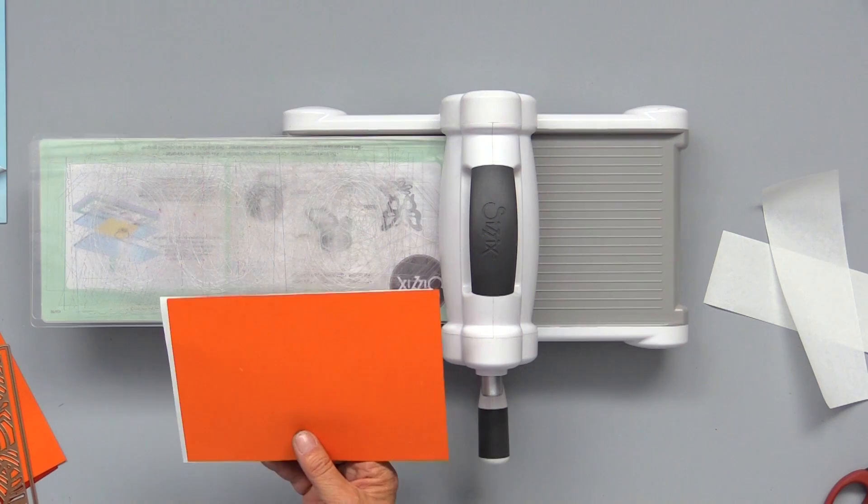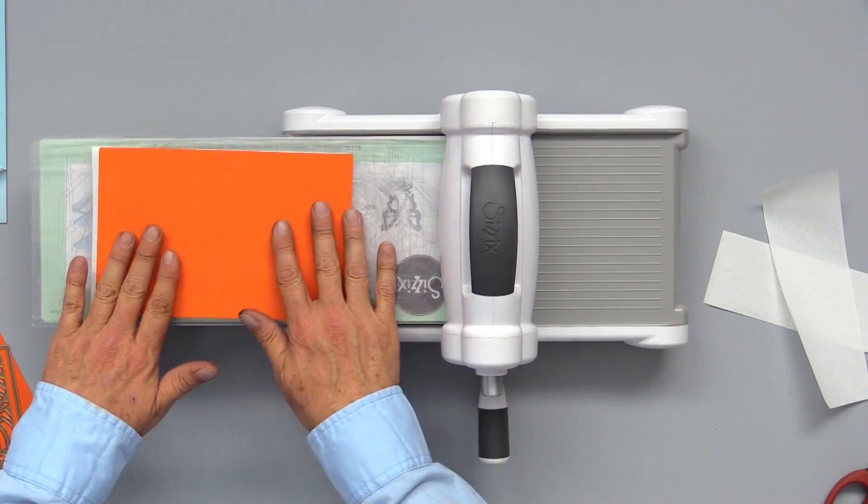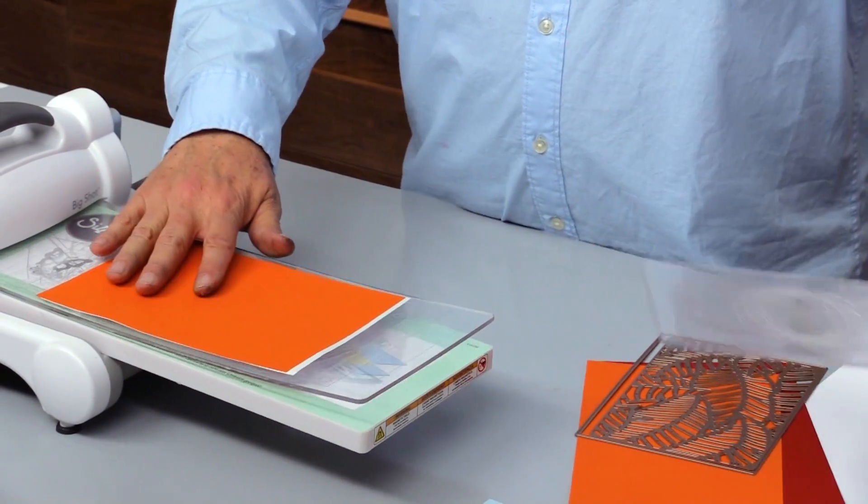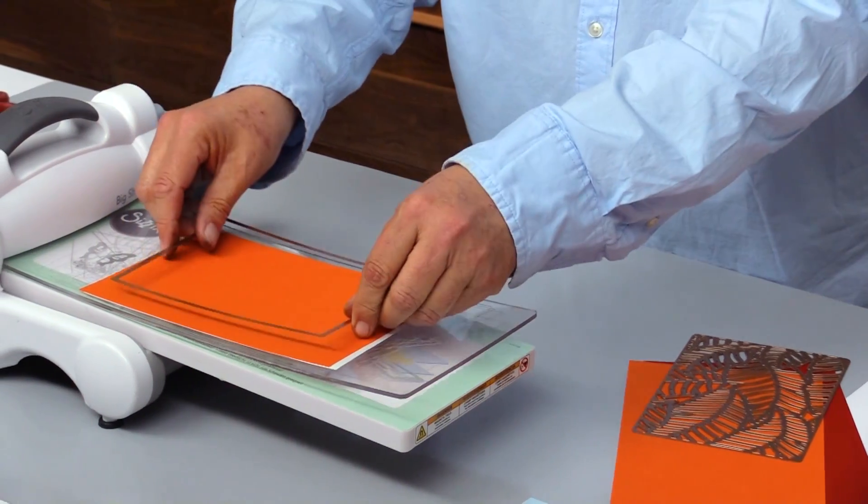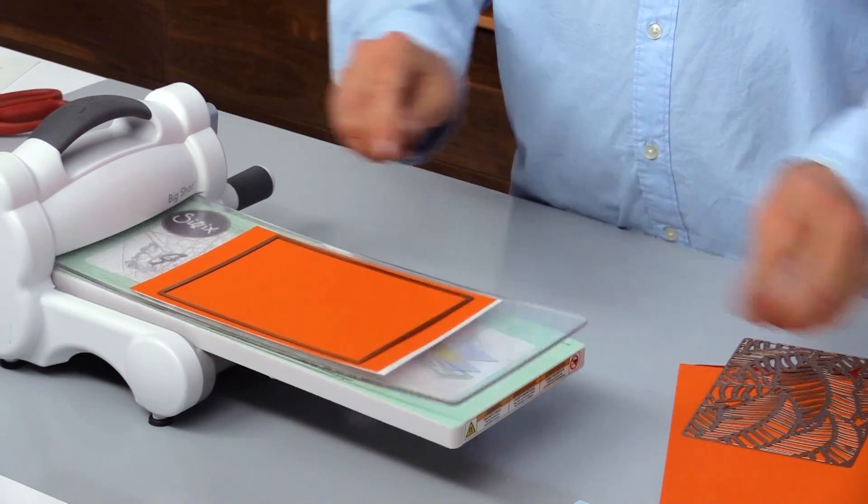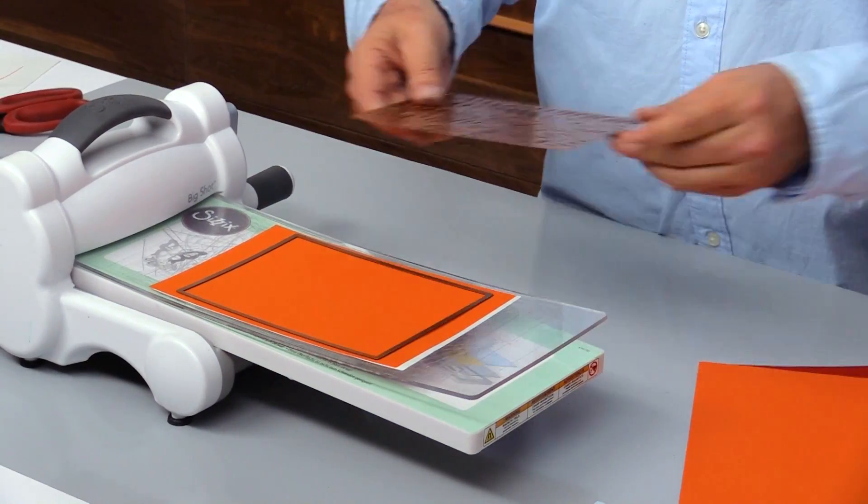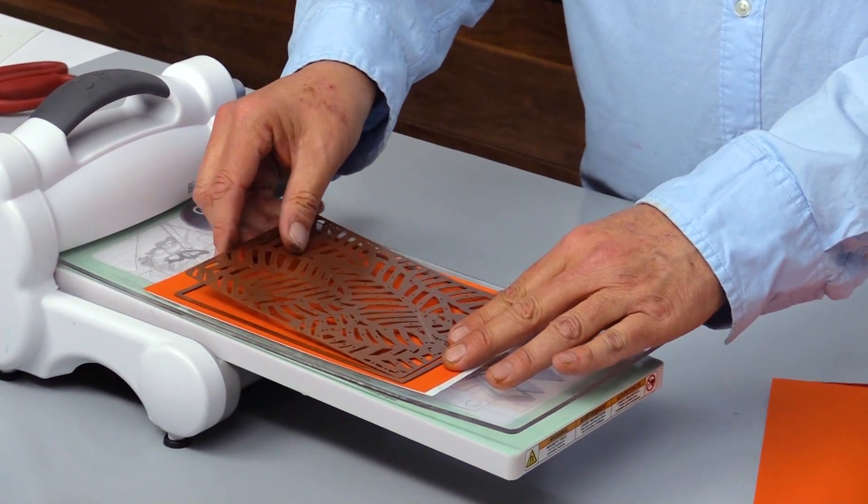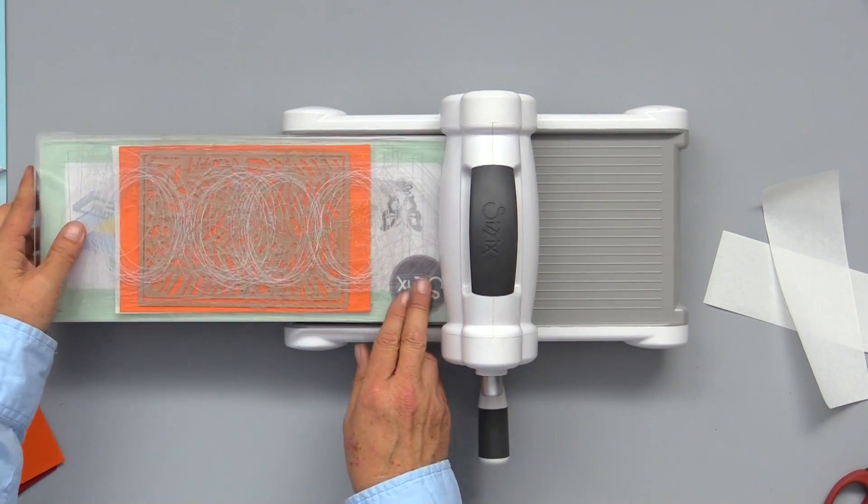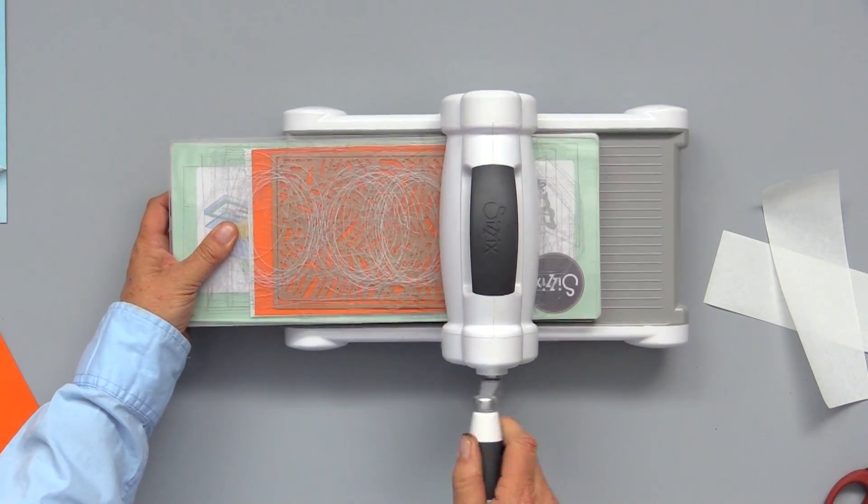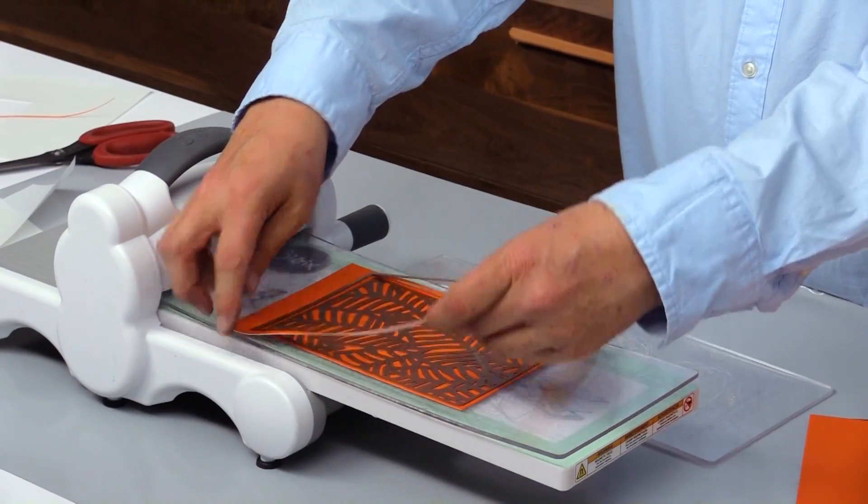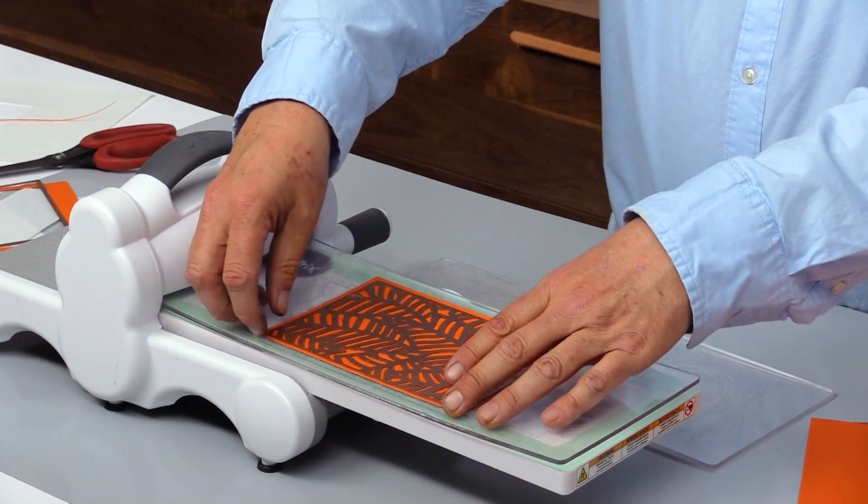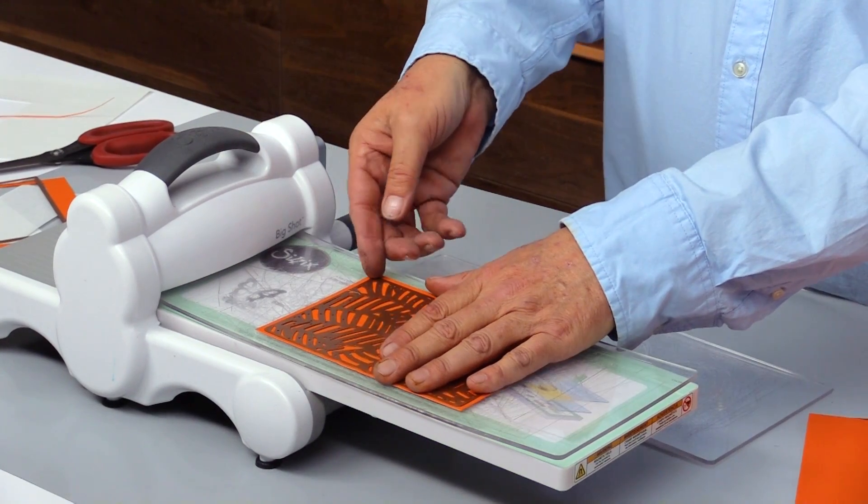So we'll go ahead and die cut this like normal. We're laying that on our die cutting machine and placing our die.